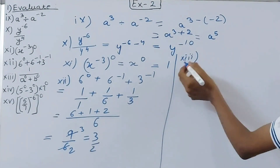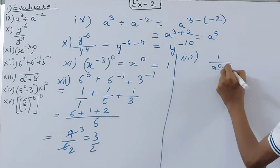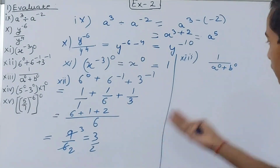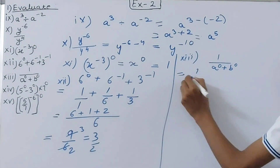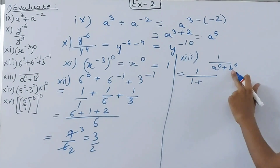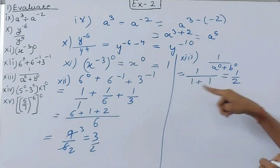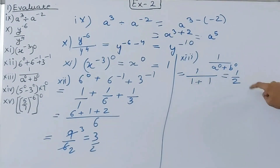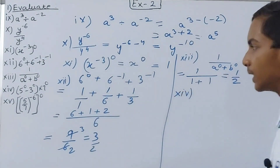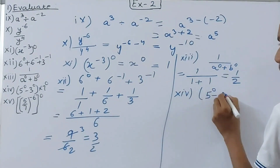The 13th part is 1 upon (a to the power 0 plus b to the power 0). Since a to the power 0 is 1 and b to the power 0 is 1, this becomes 1 upon (1 plus 1), which equals 1 upon 2.